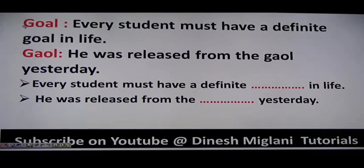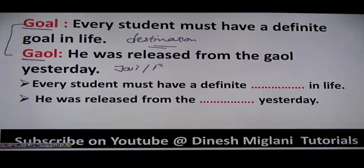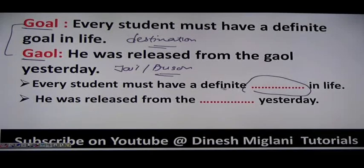Next: 'goal' (G-O-A-L) and 'gaol.' Goal deals with destination or aim. Gaol is basically the prison — also called jail. Example: 'Every student must have a definite goal in his life' — a destination or aim. 'He was released from the gaol today' — meaning released from prison.